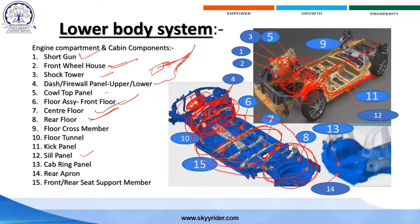Floor cross members are underneath the floor to which the fuel tank is attached below and the seating capacity is above. The floor tunnel is the area through which the propeller shaft from the engine and wiring runs inside.